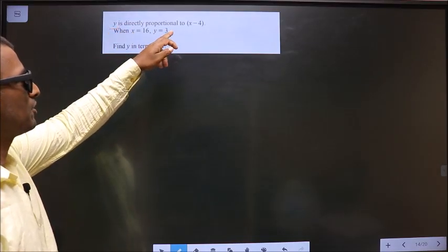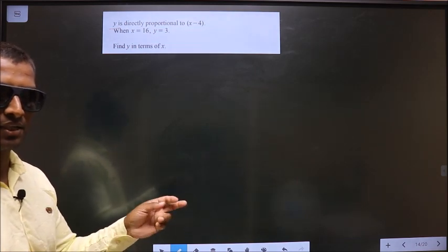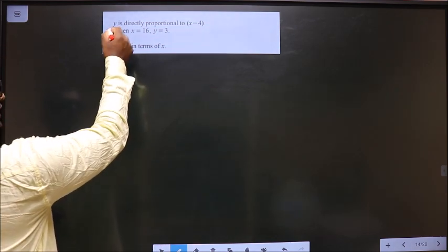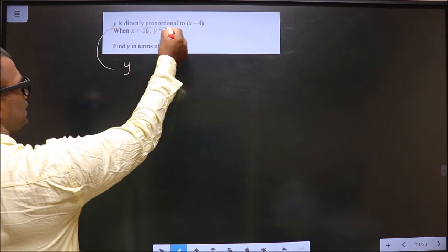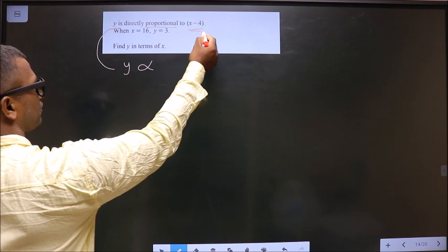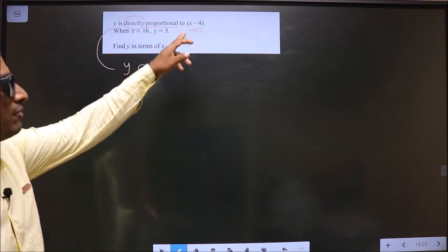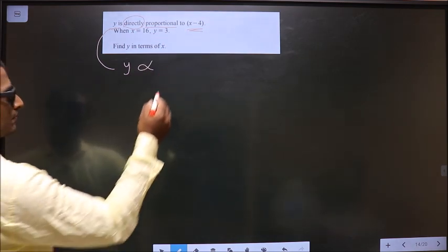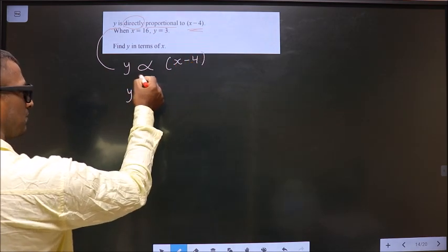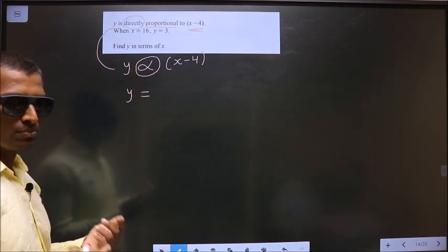y is directly proportional to x minus 4. So first let us convert the given statement to a mathematical equation. Starting with y. He said proportional, so put the proportionality symbol to x minus 4. Here he said directly, so whenever directly is specified, we write this in the numerator. Now, to remove this proportionality symbol and put equal to, we should put a constant k.